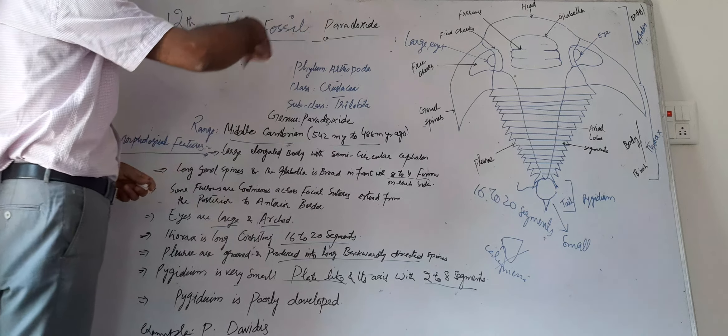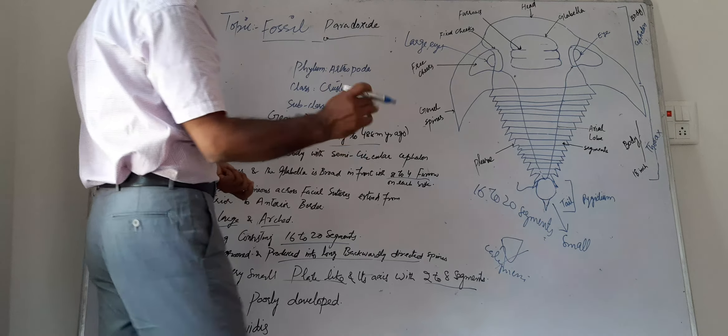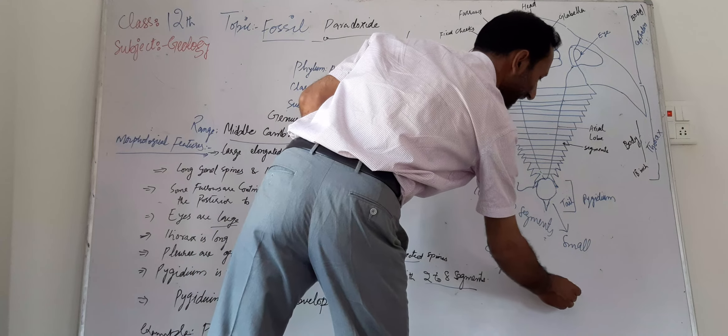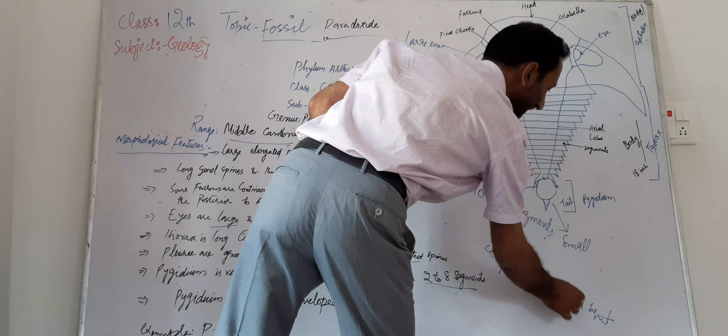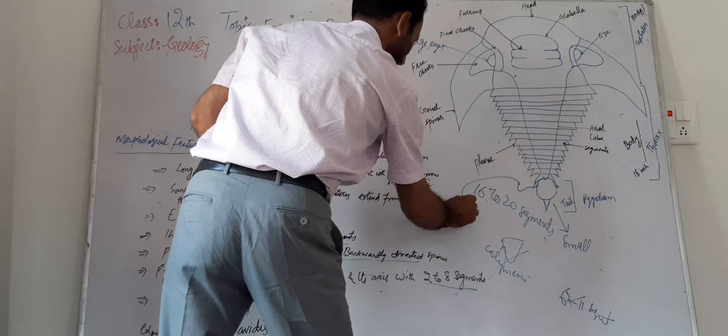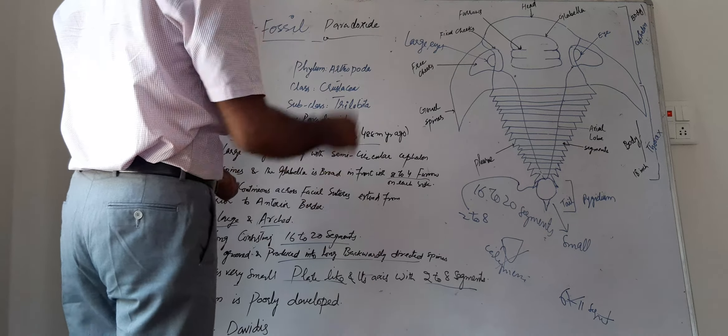Here in Calymene there is a plate-like tail structure and the axis has 6 to 11 segments. But here in Paradoxides there is segmentation of 2 to 8 segments.